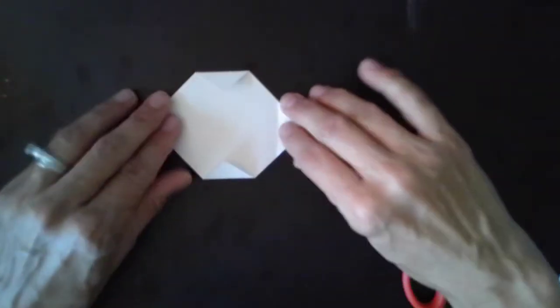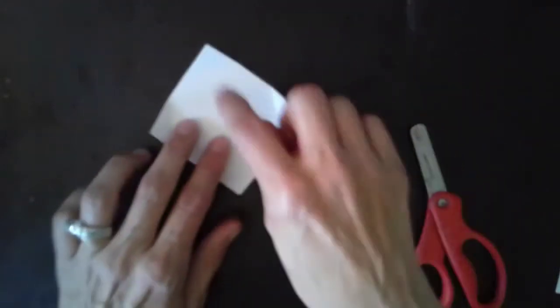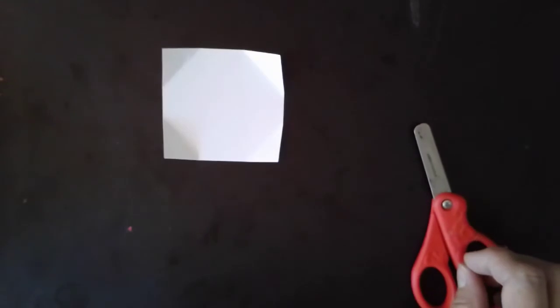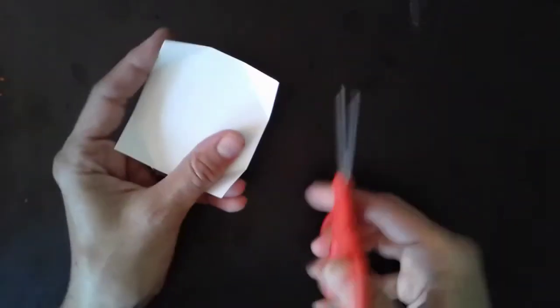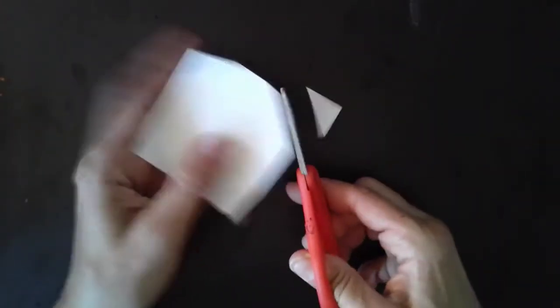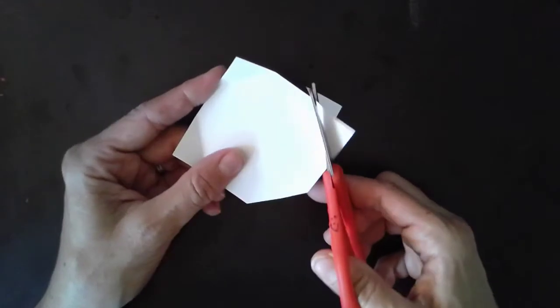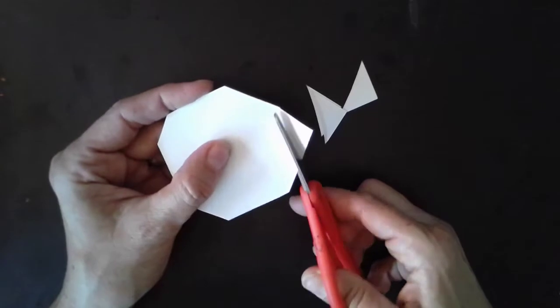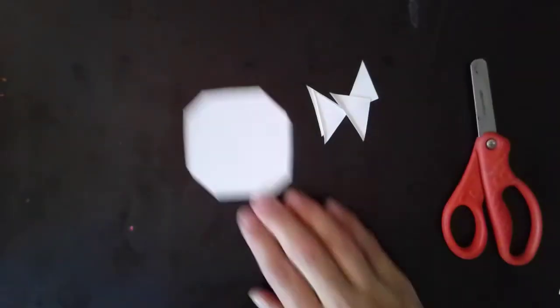Now I'm going to open it back up, and you can see now I have lines, and I'm going to cut those lines. So I'm going to cut it right on the line, just like that. Okay, good, a circle.